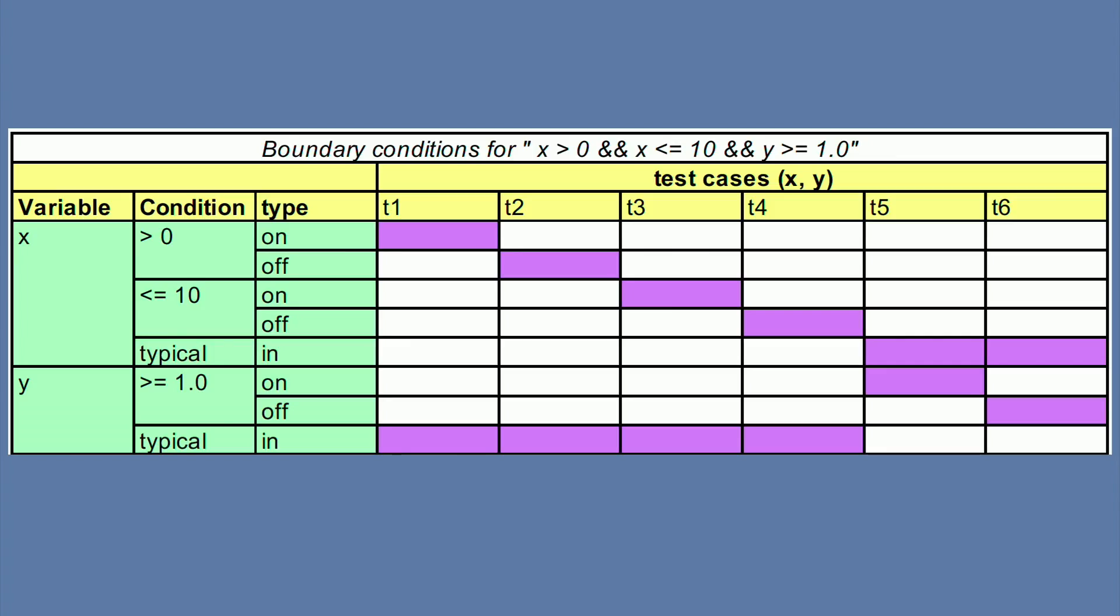Let me go to a concrete example. Let's suppose we have the following condition: x greater than 0, and x is smaller than or equals to 10, and y greater than 1.0. So we have basically three boundaries there. We should look at each one of them in an independent way, meaning kind of ignoring the others, and think about the on points and the off points, and simply use any in points for the other conditions.